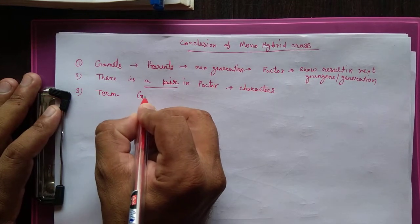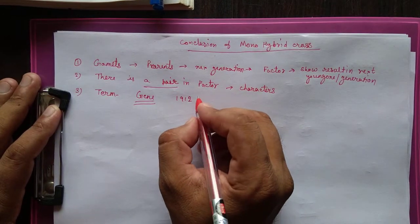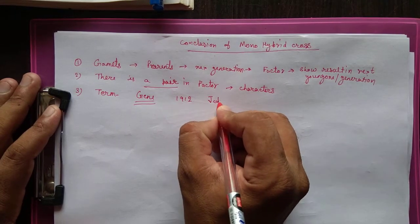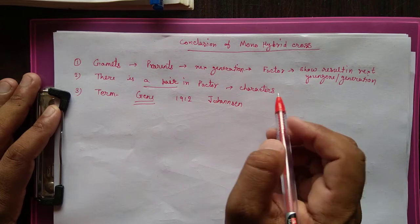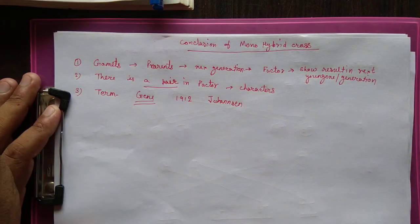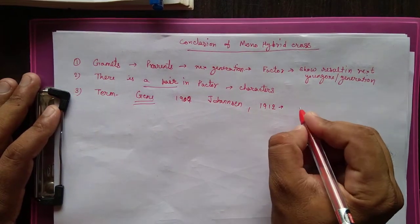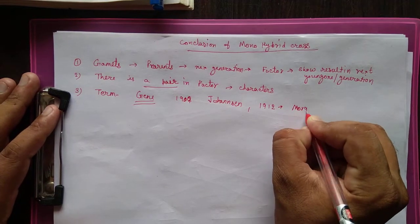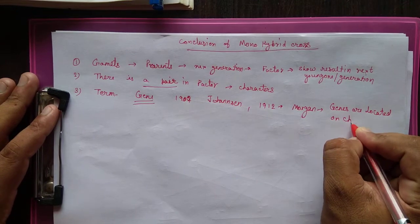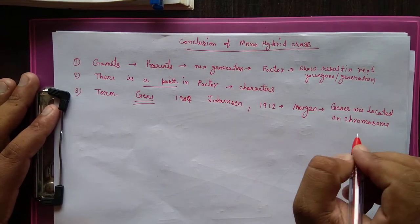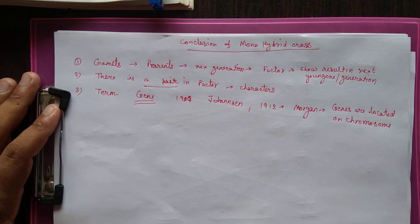The third conclusion involves the term 'gene.' Mendel called these units 'factors,' but later, in 1912, a scientist called these factors 'genes,' which are responsible for the characters passed to a generation. Morgan then discovered that genes are located on chromosomes.